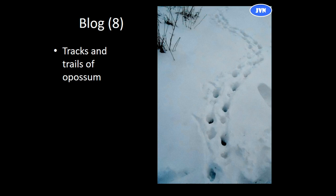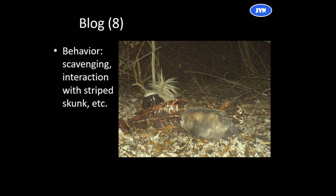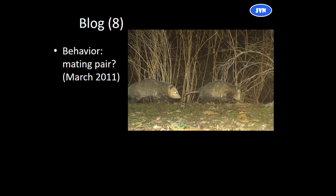A couple of the blog entries really talk about the tracks and trails of opossum. There are a few that talk about scavenging behavior — I butchered a deer and put the carcass out in the hedgerow and had a possum and a skunk come very frequently to that. There's also a short one about photographing two possums together in March of 2011. The only real reason to have two adults together would be mating — we're looking at the female in front and the determined look on the male's face as he follows her while she's in heat.